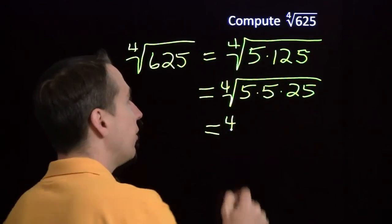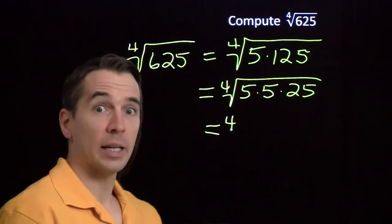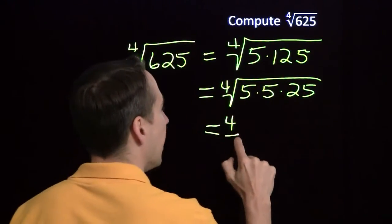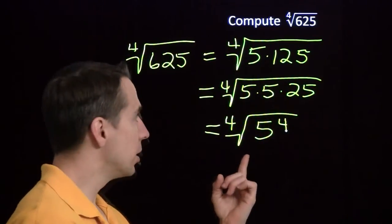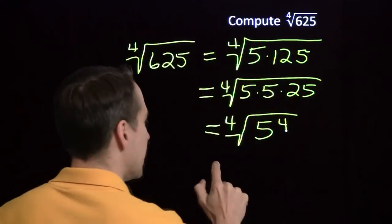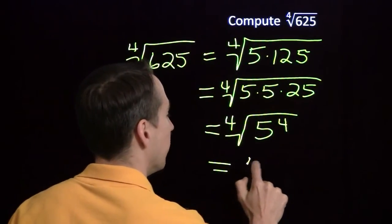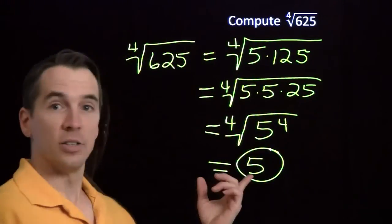So this is the fourth power of 5 times 5 times 5 squared. That gives us a total of four 5s. So this is the fourth root of 5 to the fourth. So 5 is the number that you raise to the fourth power to get 625. And our answer is 5.